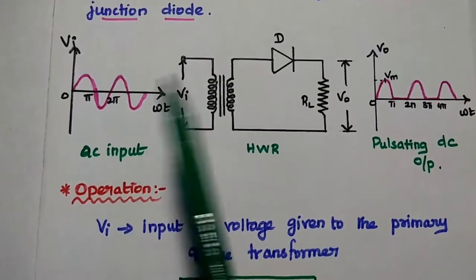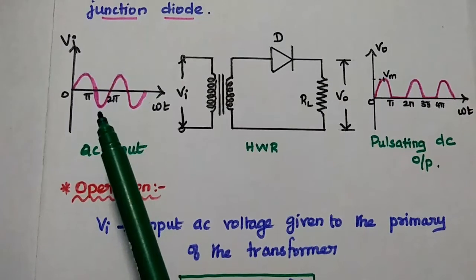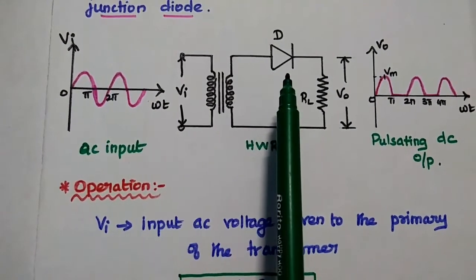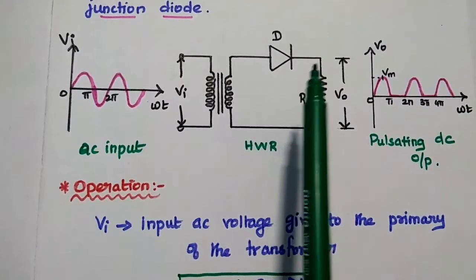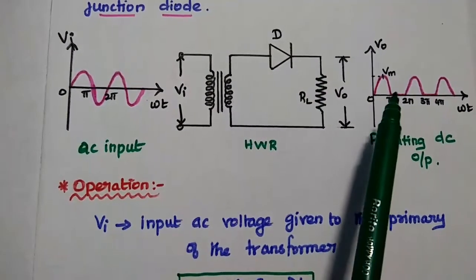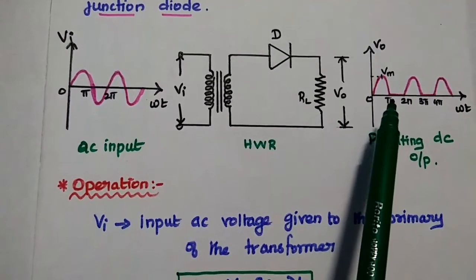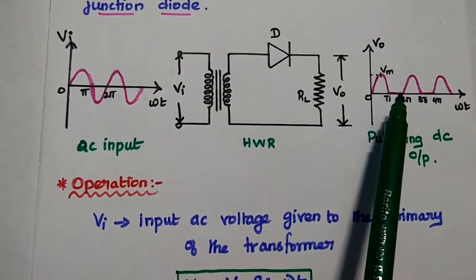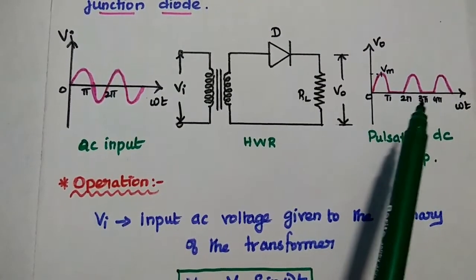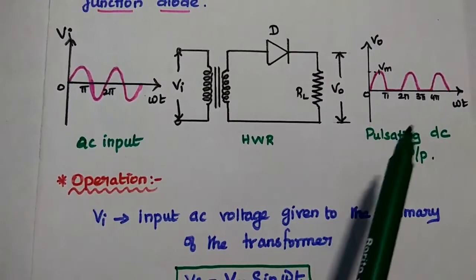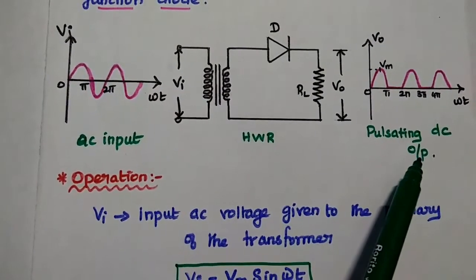During the negative half-cycle, the diode is reverse-biased because the input is negative while the diode is positive, so it is reverse-biased and there is no current conduction. We cannot get the output at the load resistor — it is 0 volt. Again, during the positive half-cycle, we can get the output signal. So here we can get pulsating DC output voltage, which is the half-wave rectified output.